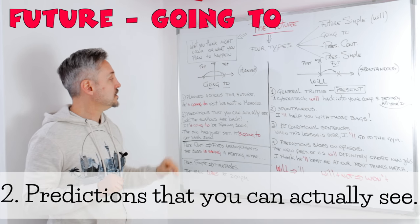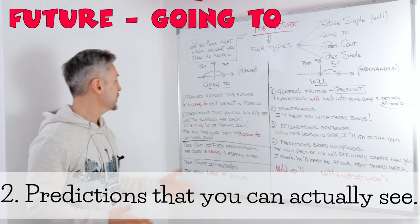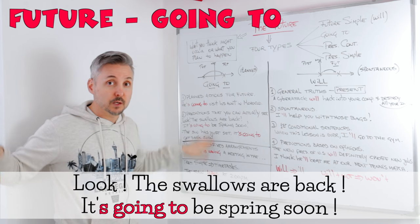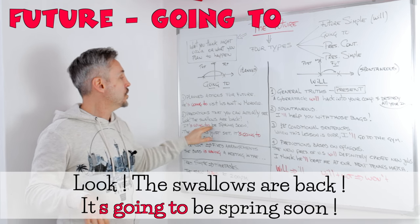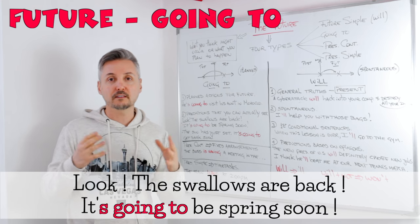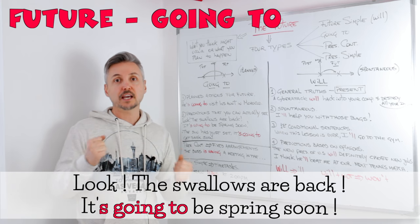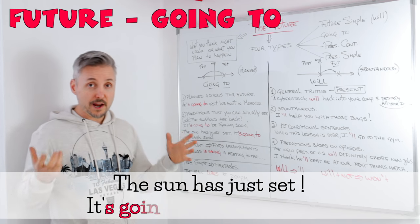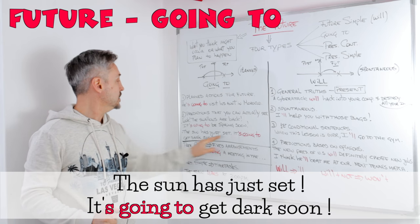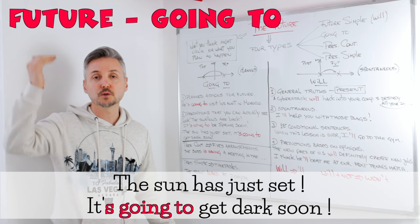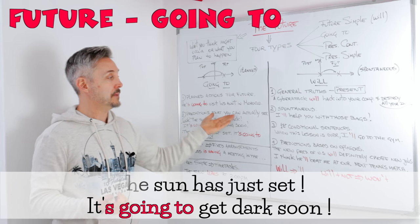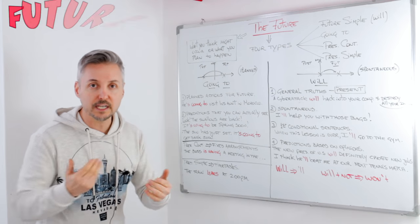The second rule for 'going to' is predictions that you can actually see. For example: 'Look, the swallows are back — it's going to be spring soon.' You know that when you see these birds, spring is coming. Or another example: 'The sun has just set — it's going to get dark soon.' Obviously you can see it, so it's a prediction based on something you can actually see.